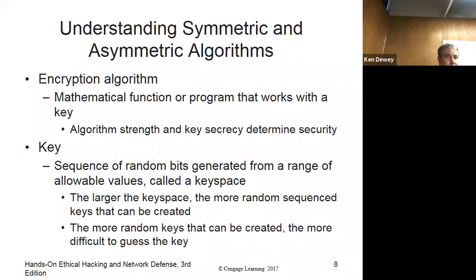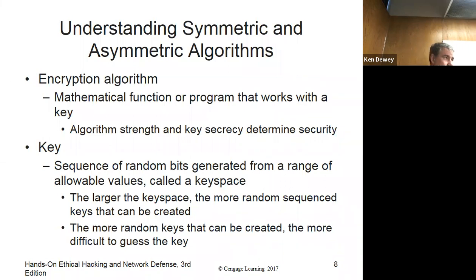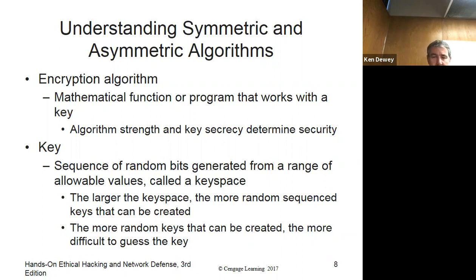The encryption algorithm is the mathematical function used to encrypt something. The algorithm's strength and key secrecy determine the security. In the Caesar cipher case, the key was 'shift by three.' When we get into symmetric and asymmetric, you actually have keys — a sequence of random bits generated from a range of allowable values. A larger key space means it's harder to break.